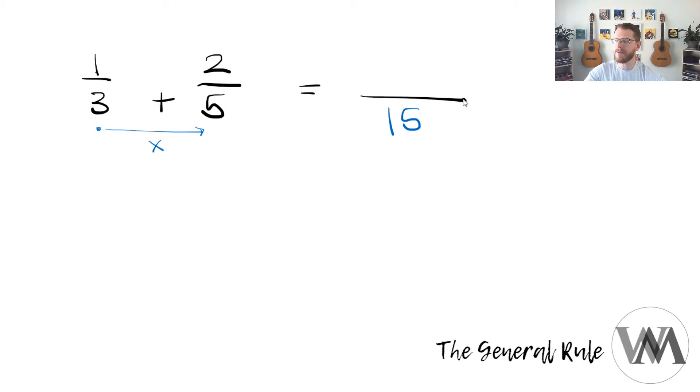Our next step will then be to cross multiply numerator with denominator as well as denominator with numerator. So then we'll get 1 times 5, which will give me 5, and we will get 3 times 2, which will give me 6. My next step will then be, since it's now over the common denominator of 15, to add the two numerators together, which will give me 11 over 15.